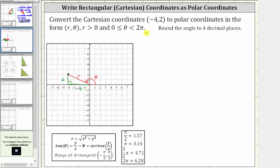Let's first determine r, where again, r is equal to the square root of the quantity x squared plus y squared, or in our case, r is equal to the square root of the quantity the square of negative four plus the square of two. Simplifying, we have the square root of 16 plus four.